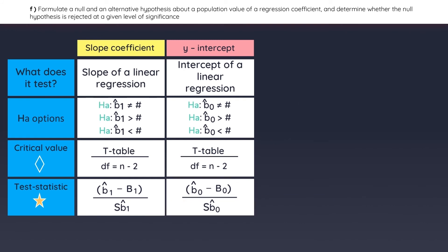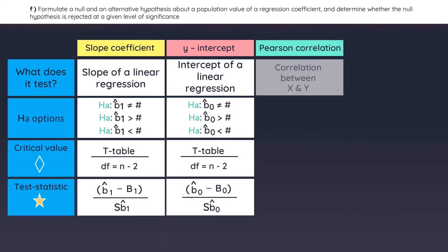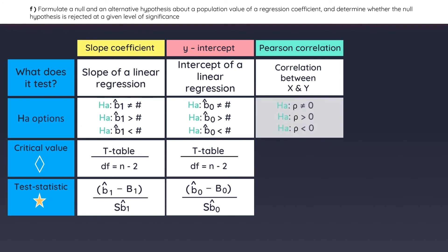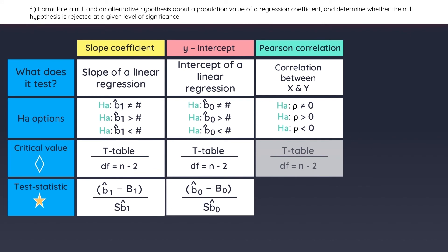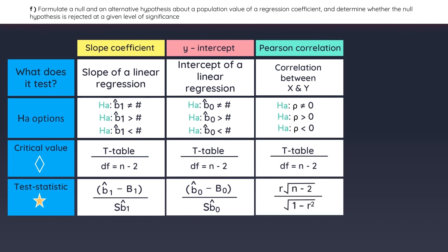The curriculum also covers a hypothesis test for correlation, which is used to test the correlation between two variables. The critical values are found using a t-table, and the formula for the test statistic is based on the correlation coefficient between X and Y.